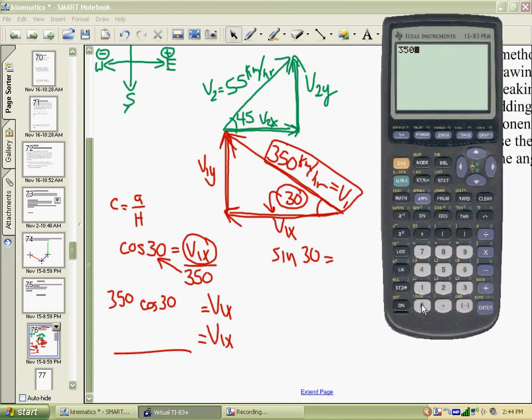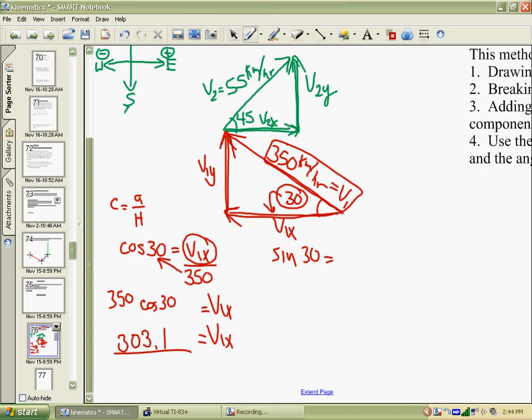That gives us 303.1 kilometers per hour. Now sine of 30 to do the other side of the triangle - that's opposite over hypotenuse. So sine of 30 would be V1y over 350. Solving for V1y, it's going to be 350 times the sine of 30. The sine of 30 is a half, so you'd get exactly 175 kilometers per hour is V1y.